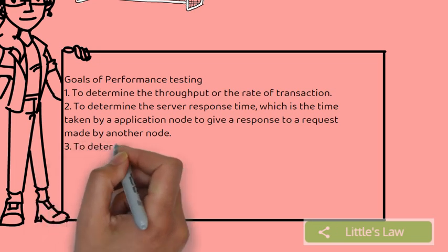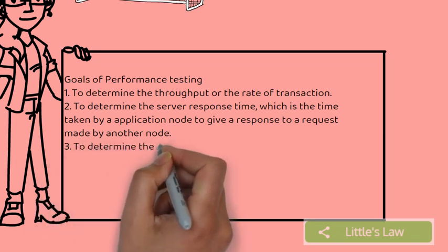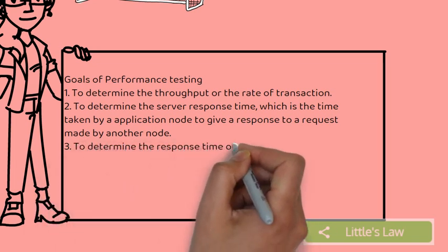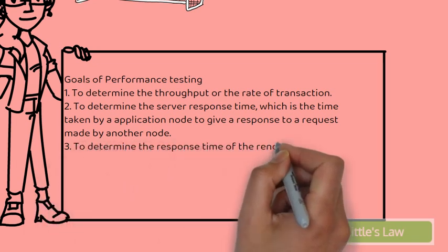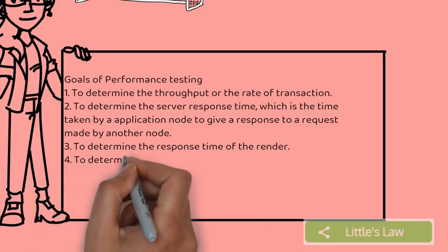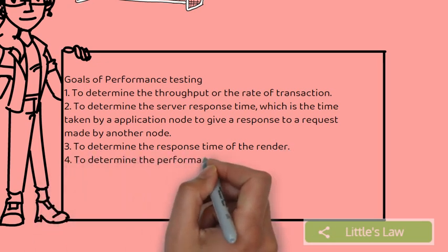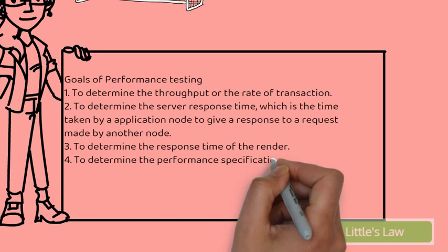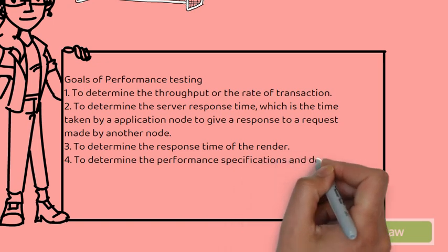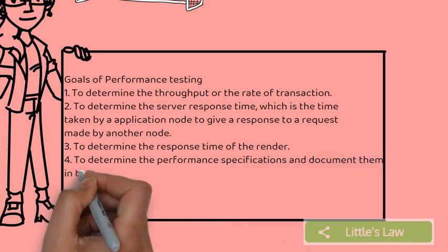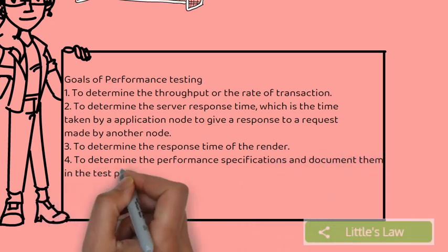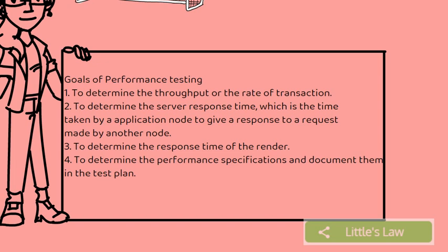Throughput refers to the amount of transactions produced over time during a test. For every application there are lots of users performing lots of different requests. What you need to ensure is that your application meets that capacity before it hits production or goes live.